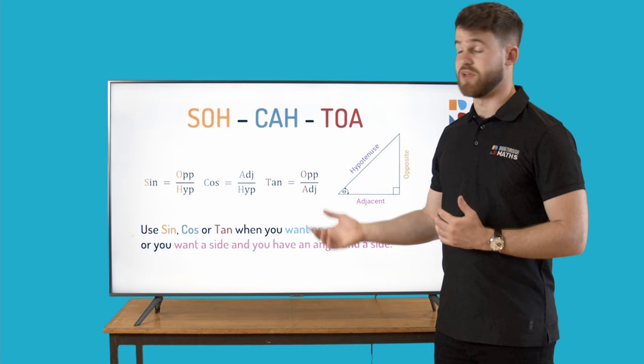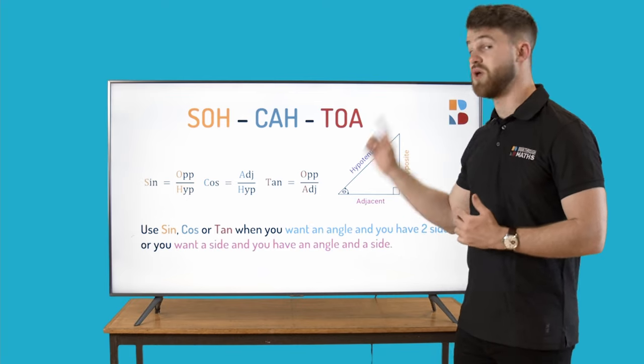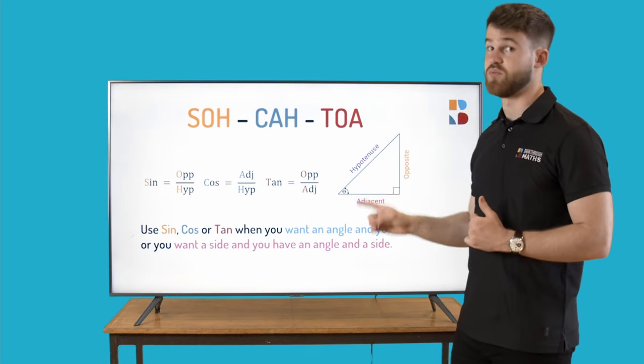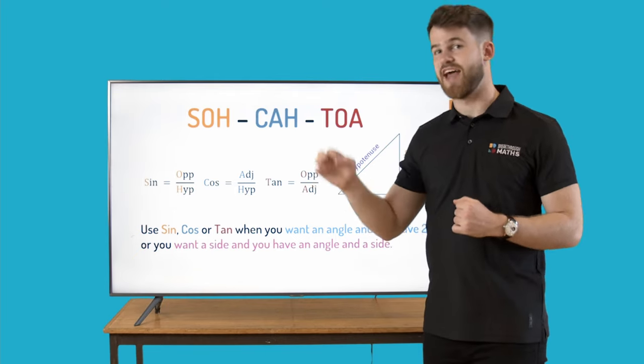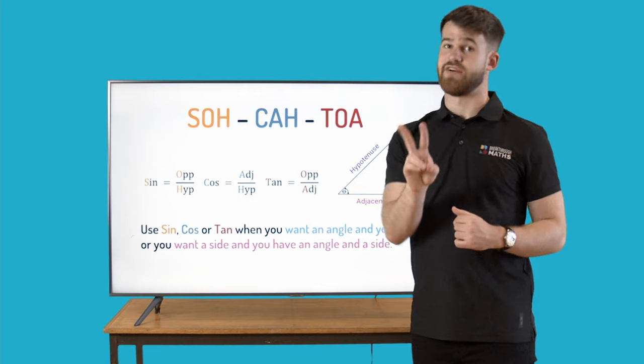When do we use sine, cos, or tan then? We use them when we want an angle and we have two sides, or when you want a side and you have an angle and a side. So two scenarios here.